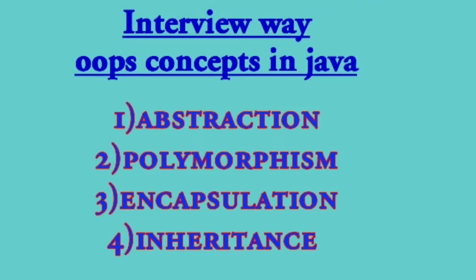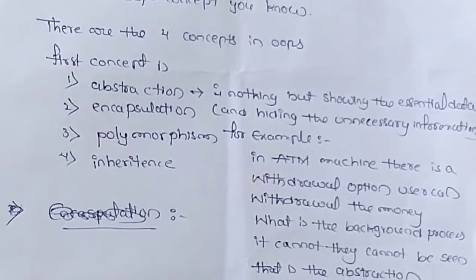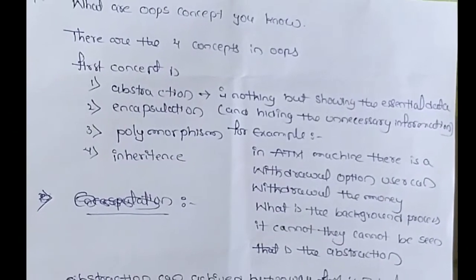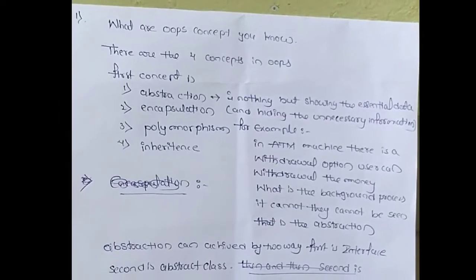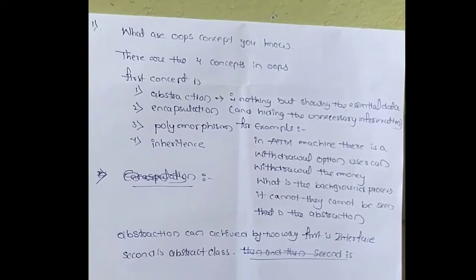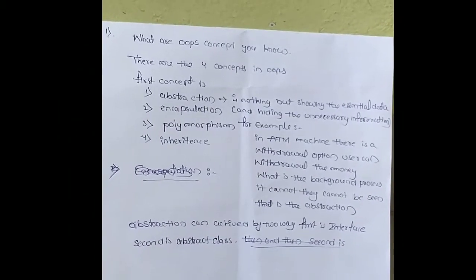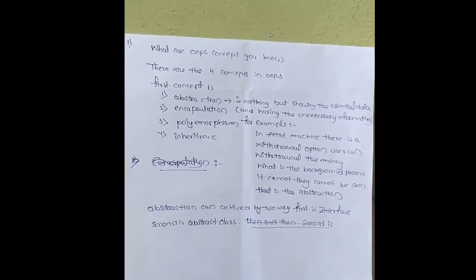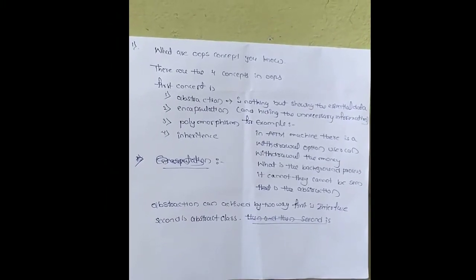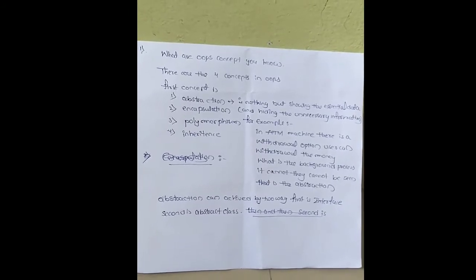In this technical interview, we cover OOP concepts in Java: abstraction, polymorphism, encapsulation, and inheritance. Abstraction means showing only the essential data and hiding unnecessary information. For example, in an ATM machine there is a withdrawal option — the user can withdraw money, but the background process cannot be seen. That is abstraction.